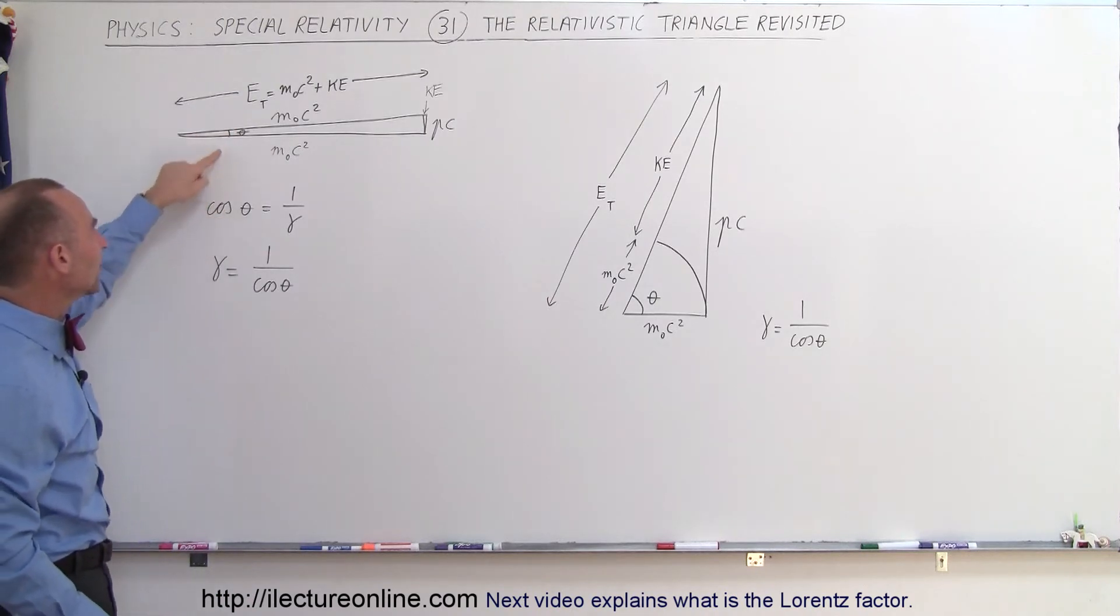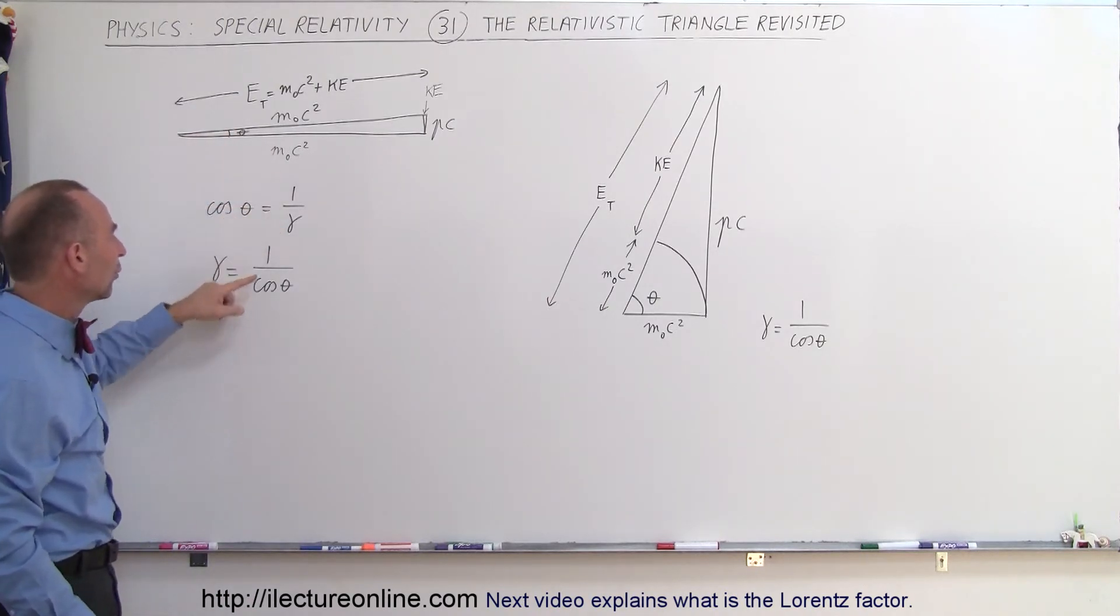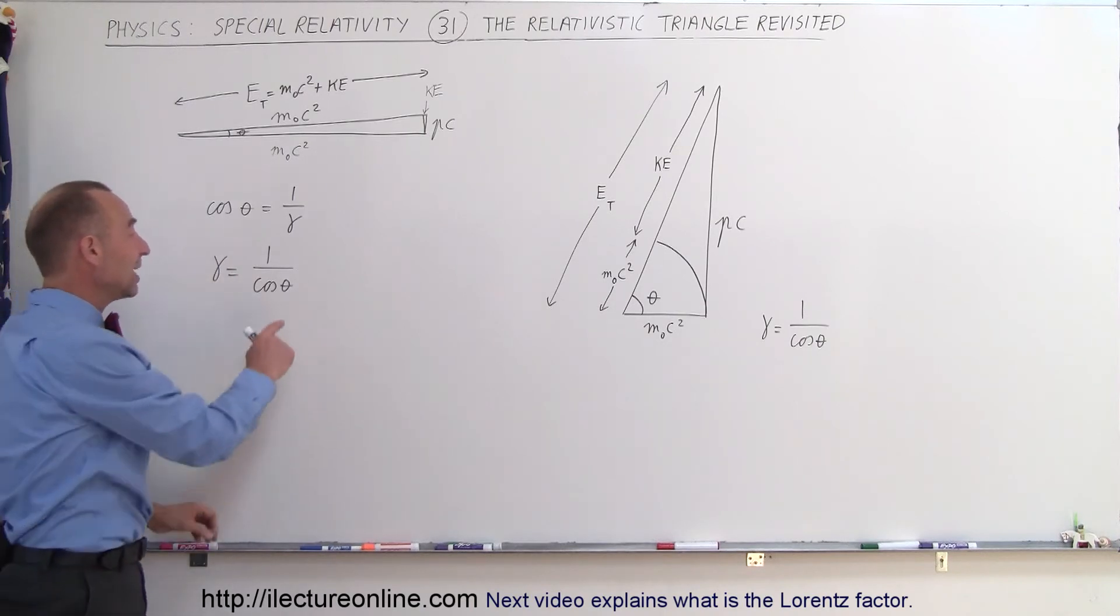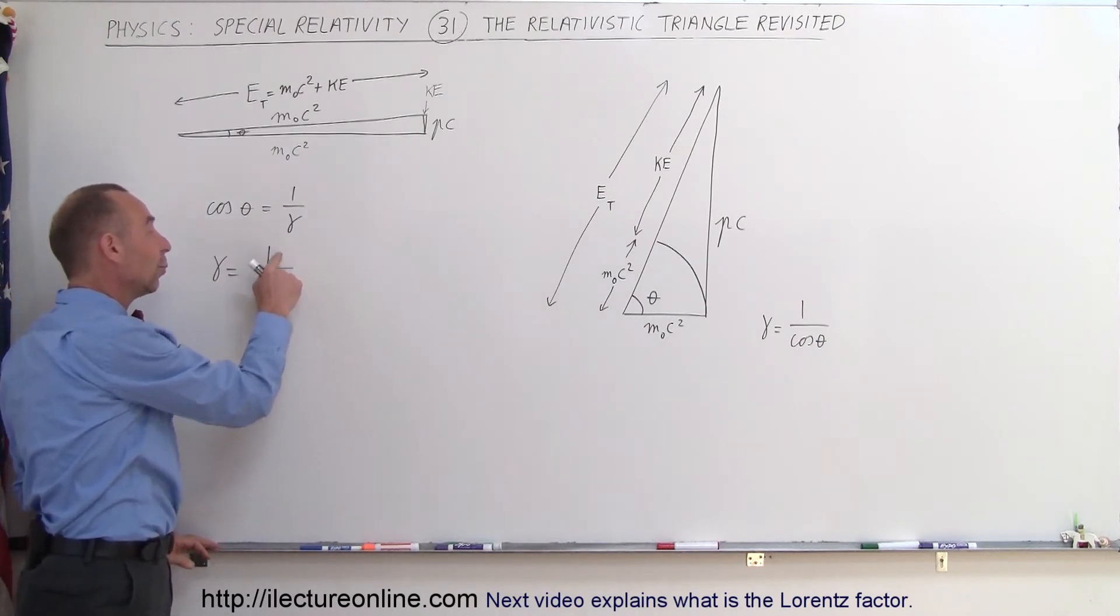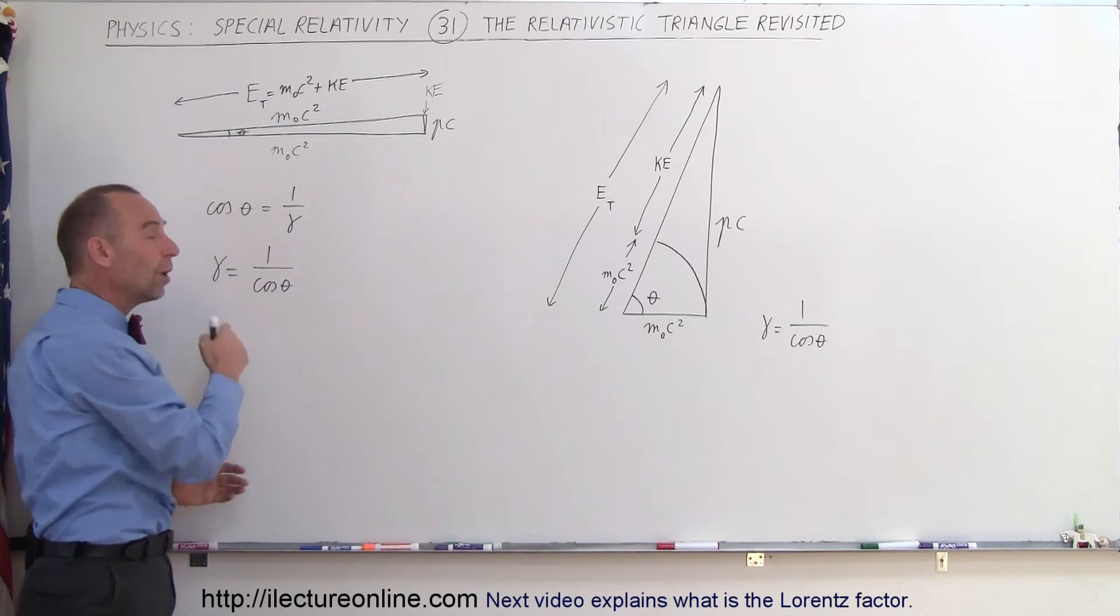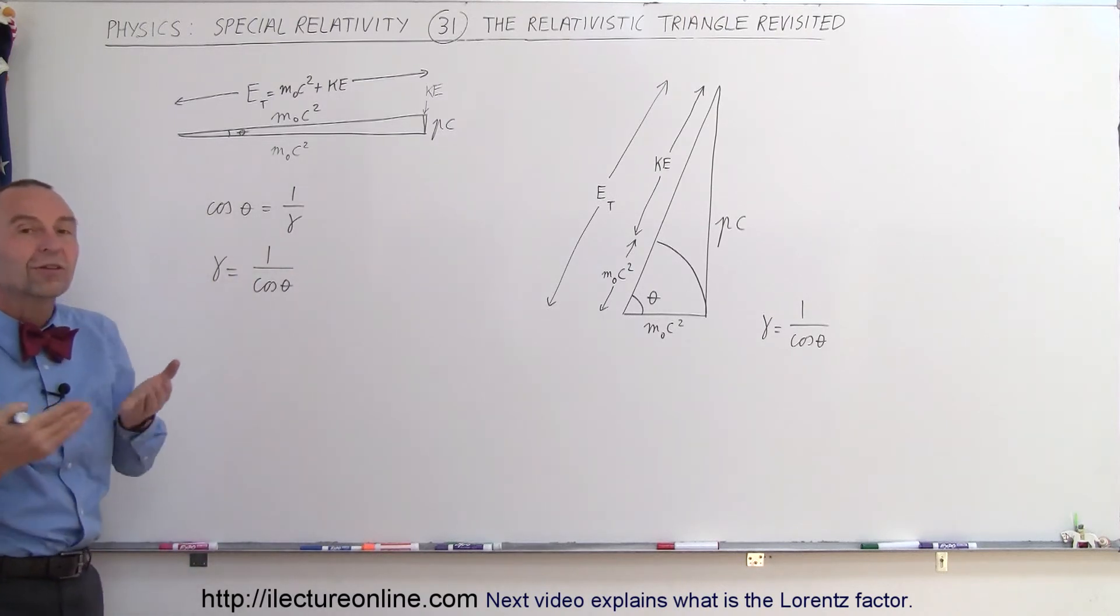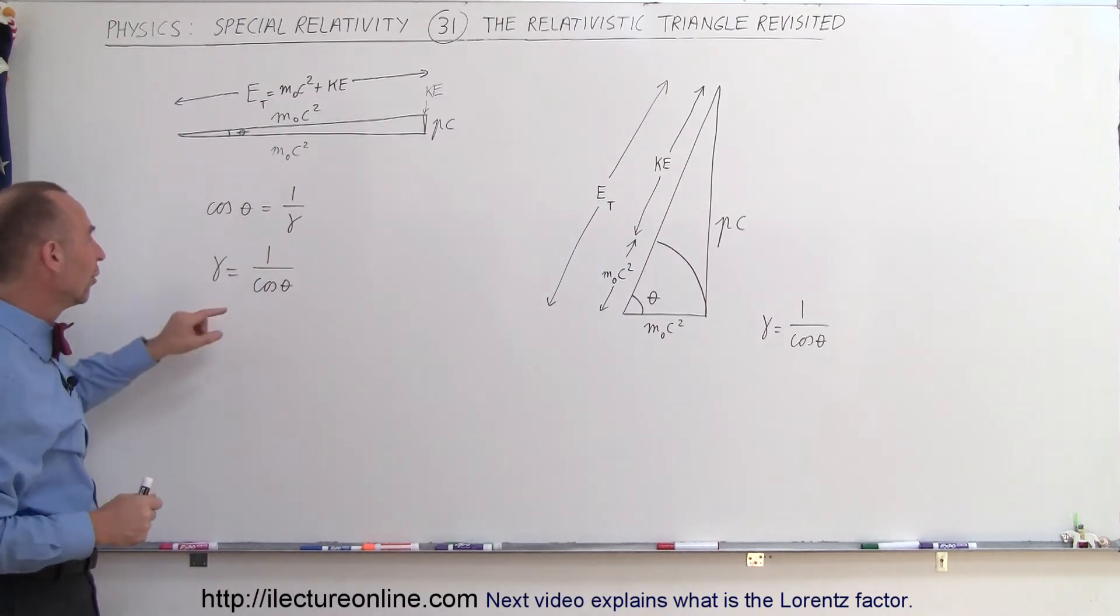Notice that the cosine of the angle is equal to 1 over gamma, or gamma is equal to 1 over the cosine of the angle. If the angle is near 0 degrees, then 1 divided by 1 makes gamma 1, and for a gamma that's equal to 1, there's no relativistic effects at all.